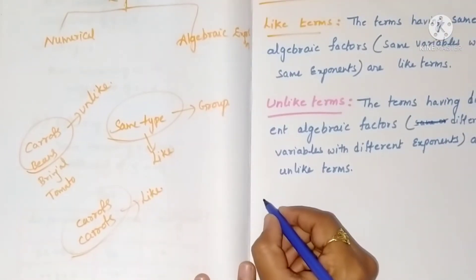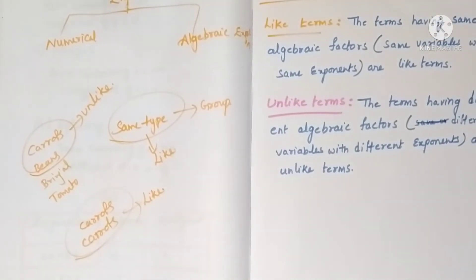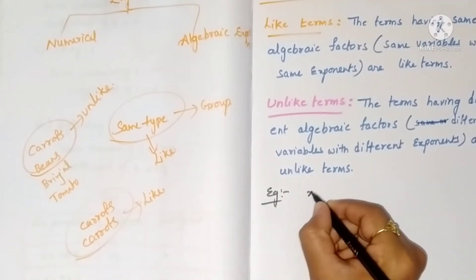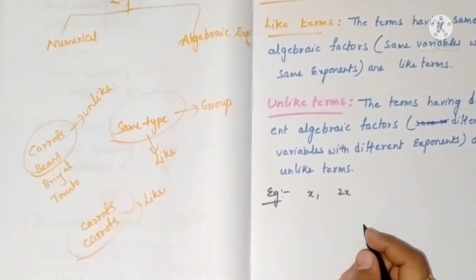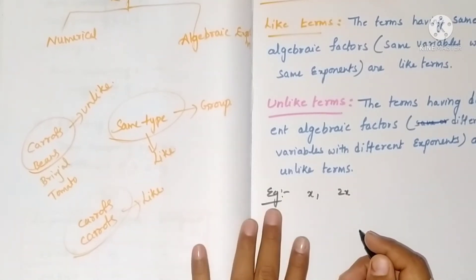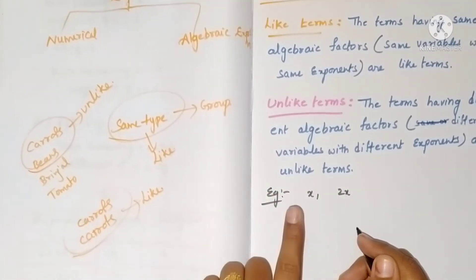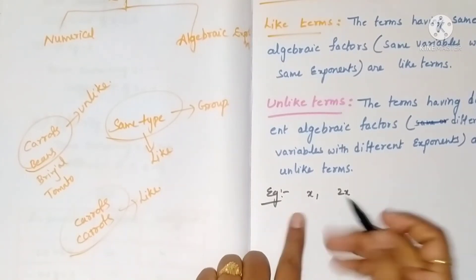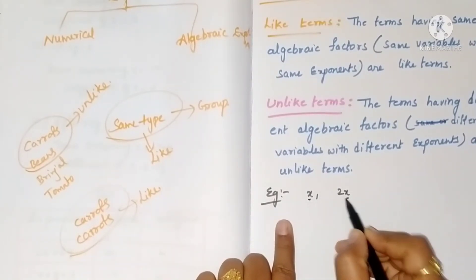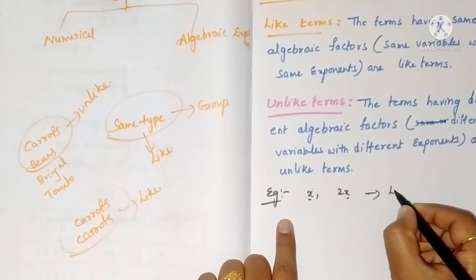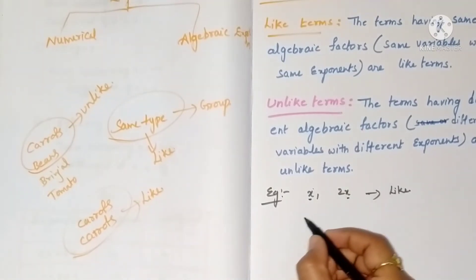We will see some examples. Here, x and 2x: to compare whether they are like or unlike terms, first step is ignore the constant and the number. Next, only consider the algebraic term and letters. The letter is the same (x) and the exponent power is one and one, so these are like terms.